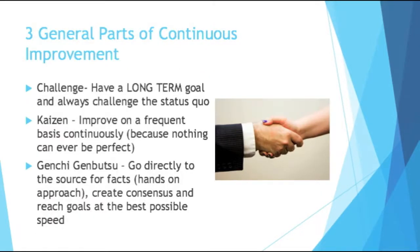We've talked about continuous improvement a few times, so here are three general parts. First, challenge: have a long-term goal in mind and always challenge the status quo. If you're just sitting around happy with where you're at, you're not going to continuously improve. Then you have kaizen, which is synonymous with continuous improvement — improve on a frequent basis continuously, because nothing can ever be perfect. It's okay if the improvements are small; just keep doing them and they will add up. The last one, genchi genbutsu — I've also heard it as gemba kaizen — is the idea that you should go directly to the source for facts. It's a hands-on approach: create consensus and reach goals at the best speed possible. It's all about going to the source; you can't just sit in your office away from everyone and expect to know what's going on.